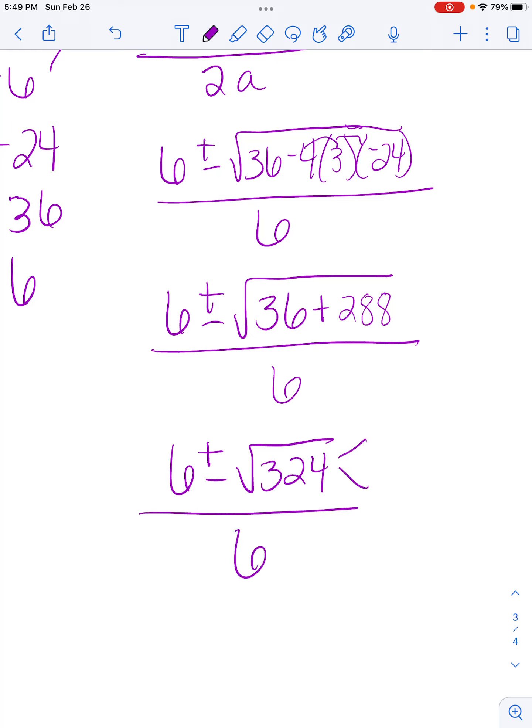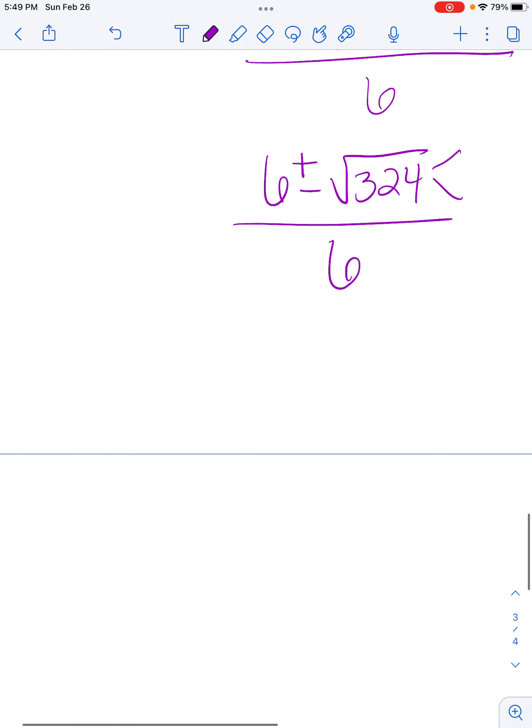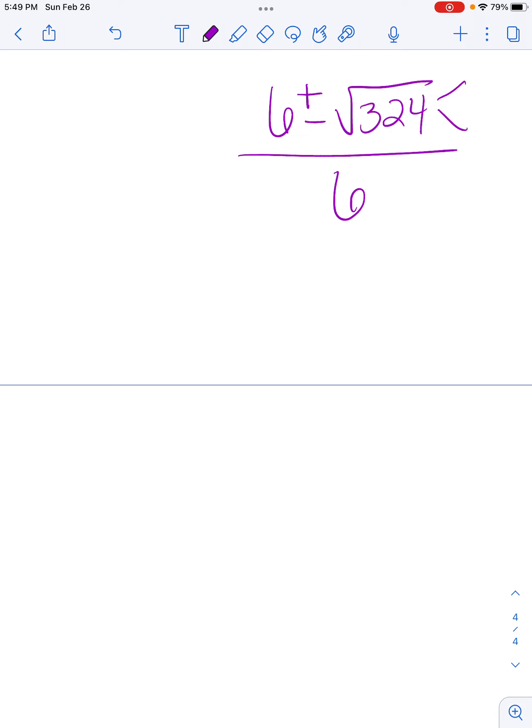Remember what I taught in class about finding the perfect square that goes into 324? So thinking about our perfect squares, I'm going to write them down here at the bottom. 2 times 2 is 4, 3 times 3 is 9, 4 times 4 is 16, 5 times 5 is 25, 6 times 6 is 36, 7 times 7 is 49, 8 times 8 is 64, 9 times 9 is 81, 10 times 10 is 100.